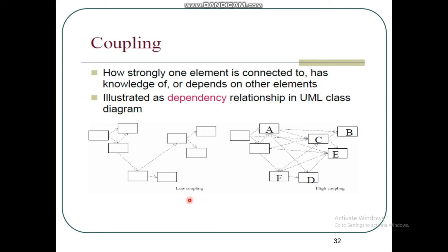We have two types: low coupling and high coupling. Our ideal goal is to achieve low coupling. High coupling basically means each class is heavily connected to and dependent on other classes, which increases complexity. So we want low coupling — we want to minimize it.